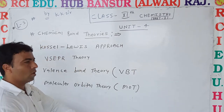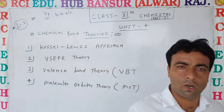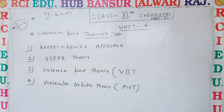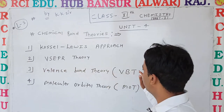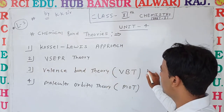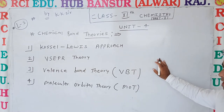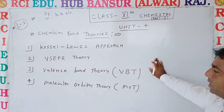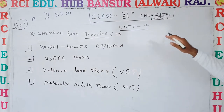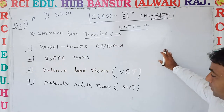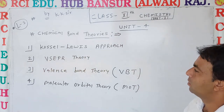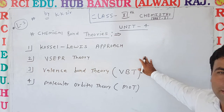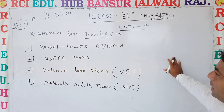So there will be 4 theories to explain chemical bond. First is Kossel-Lewis approach, second is VSEPR theory, third is Valence Bond Theory (VBT), and last is Molecular Orbital Theory (MOT). One by one we will study about these theories.